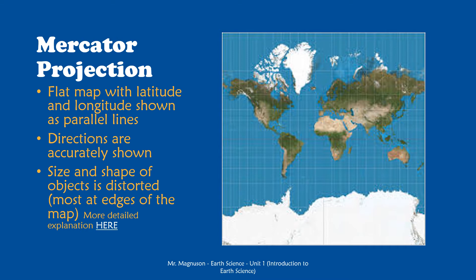Size and shape are very distorted on the Mercator projection. As I said, the further away you get from the center of the map, the more things are distorted. If you look at the picture here, Antarctica — that big white mass at the bottom — is definitely not as big as all the other continents put together. Greenland, that white mass at the top, is not the size of Africa. There's a link to a video on this slide that will do a better job with animations of showing what I mean — take a look at that link if you want more information.